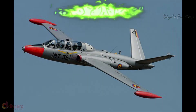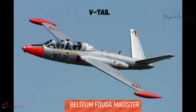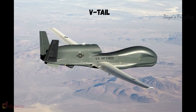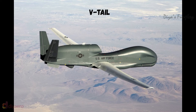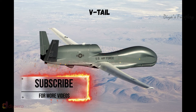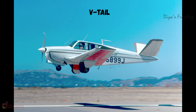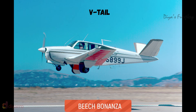V-tail. A V-tail can be lighter than a conventional tail in some situations and produce less drag. The control surfaces on the tail of these airplanes are called ruddervators. Ruddervators are a combination of rudders and elevators, and the same control surface is used both for pitching and yawing.